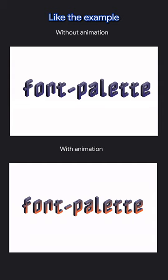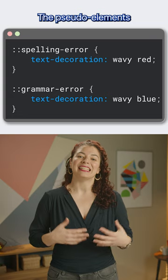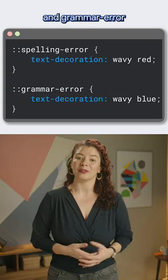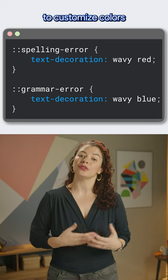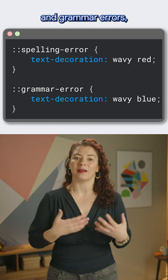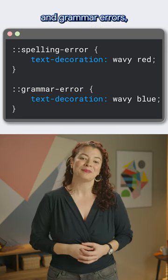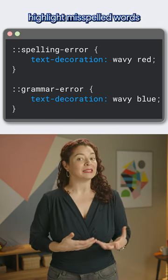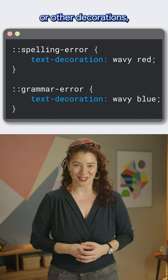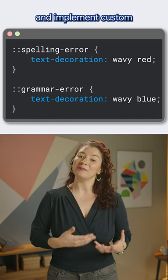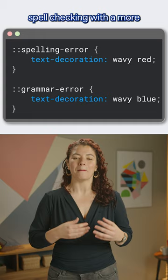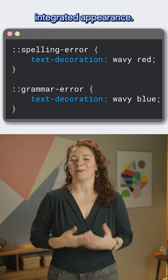Like the example on the screen, the pseudo-elements spelling-error and grammar-error allow you to customize colors for spelling and grammar errors, highlight misspelled words with background colors or other decorations, and implement custom spell checking with a more integrated appearance.